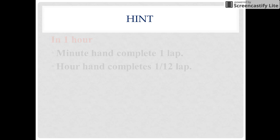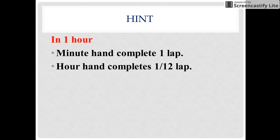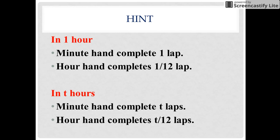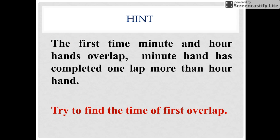Let me give you a hint. In one hour, the minute hand completes one lap of the analog clock, and the hour hand would complete 1/12th of a lap in one hour. So in T hours, the minute hand would have completed T laps and the hour hand would have completed T/12 laps. Also, when the minute hand and the hour hand overlap for the first time, the minute hand would have travelled one more lap than the hour hand.